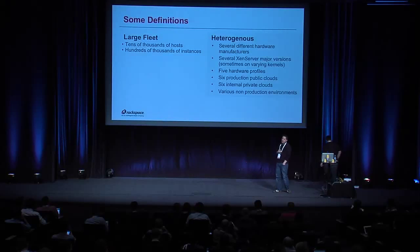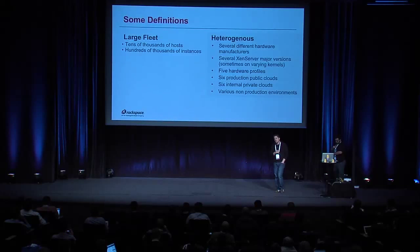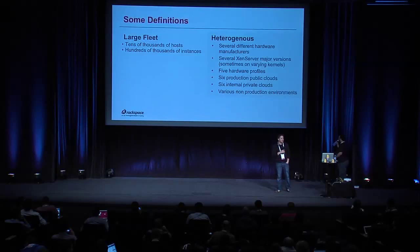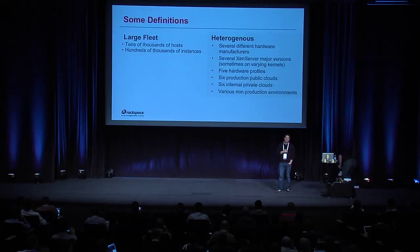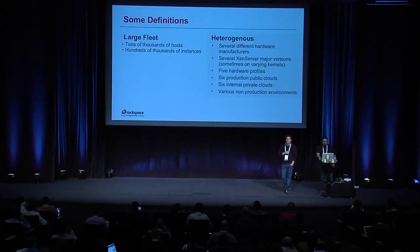We have six internal private clouds. We run OpenStack on OpenStack — that's our internal OpenStack deployment we refer to as Inova — as well as any of our pre-production environments: CI, CD, dev, all that kind of stuff.